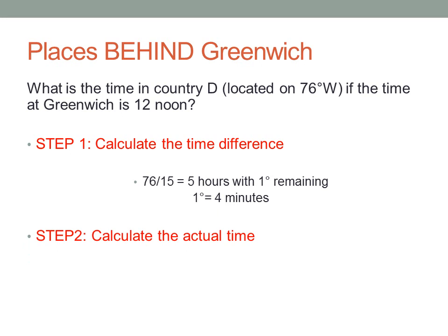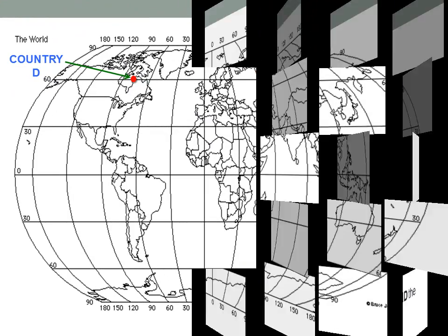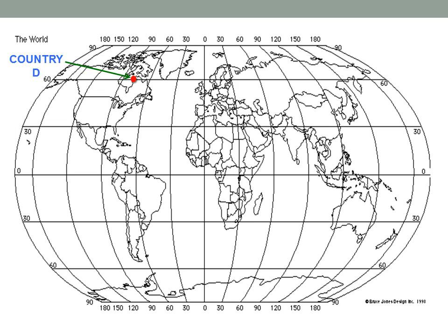Step 2, calculate the actual time. We will subtract 5 hours and 4 minutes from 12 noon, because 76 degrees west is behind Greenwich. The time at country D will be 5 hours and 4 minutes behind the time at Greenwich, or 6:56 a.m. Country D is located at 76 degrees west of the Greenwich meridian.